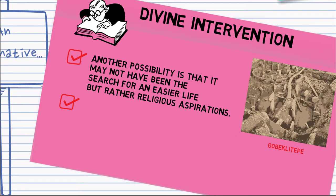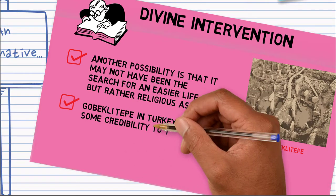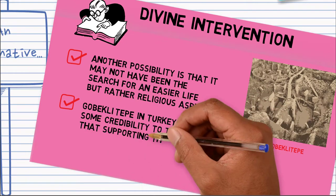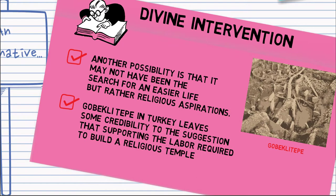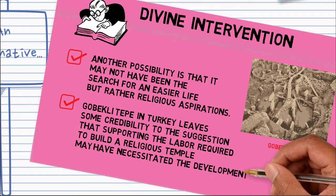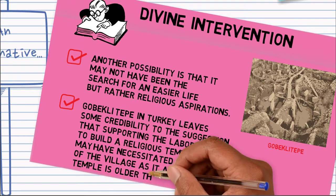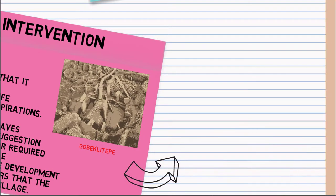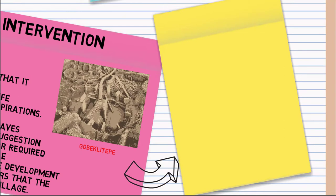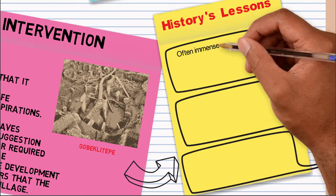And if you look at the town or the discovery in Turkey, it lends some credibility to the suggestion that supporting the labor required to build a religious temple. And the reason he comes up with that is that the development of the village close to the temple appears that the temple was older than the village. So the religion may have been what started the people getting agriculture.